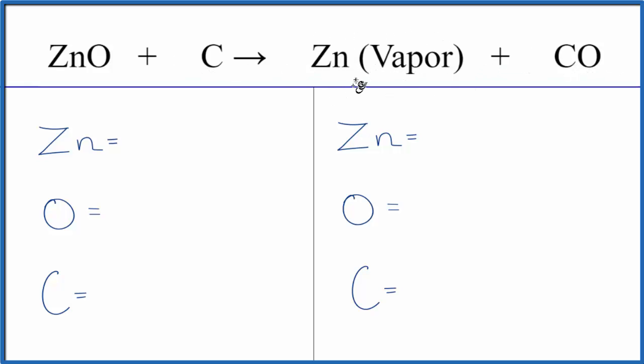And this zinc vapor, when it cools down, it'll condense into solid zinc. So we're kind of decomposing the zinc oxide to get the zinc by itself.